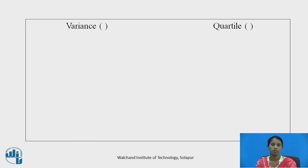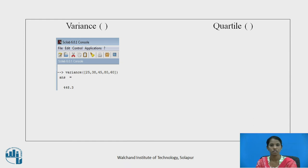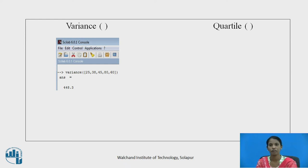The variance of a vector can also be found out using the Scilab statistical function VARIANCE. For vector A = [25, 38, 45, 80, 60], the variance of the above vector is 448.3.